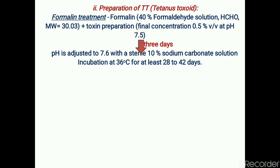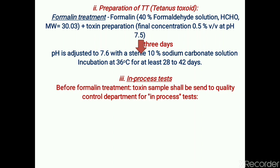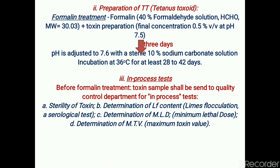Then there is an incubation period at 36°C for at least 28 to 42 days. While these steps are performed, several in-process tests are required to be carried out. Before formalin treatment, the toxin sample is sent to the quality control department for in-process tests, which include sterility testing, determination of LF content, determination of MLD (minimum lethal dose), and the maximum toxin value.